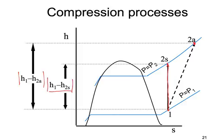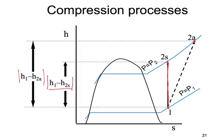In other words, the non-isentropic compression process requires a larger amount of energy than if you do it isentropically. So the isentropic efficiency for a compression process is defined as the ratio of two energy quantities — two enthalpy change values. It should be (H2S minus H1) divided by (H2A minus H1). This is the isentropic efficiency of a compressor.